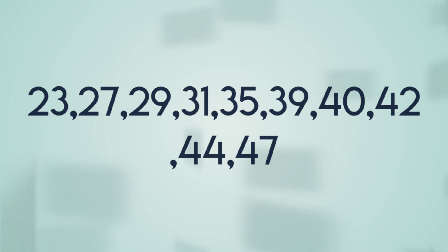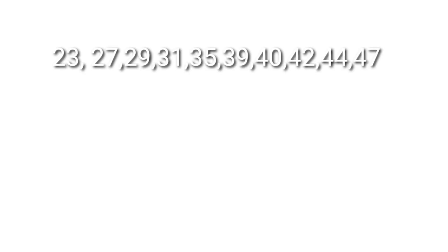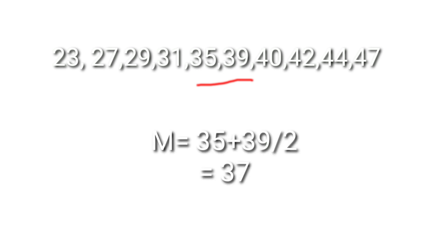What if the number of students is 10 — an even number? To find the median of an even-numbered data set, first arrange from least to greatest, then find the average of the two middle values. For the data set 23, 27, 29, 31, 35, 36, 40, 42, 44, 47, the two middle values are 35 and 36. So the median is (35 + 36) / 2, but using 35 + 39 / 2 = 37 in the example given.